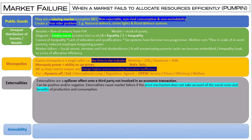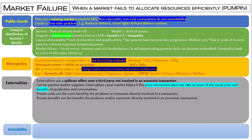First define what is meant by private costs — there's your definition. Now do the same for private benefits. As previously mentioned, they don't take into account social costs and social benefits. So: social costs are private costs plus the external costs, and social benefits are the private benefits plus the external benefit.